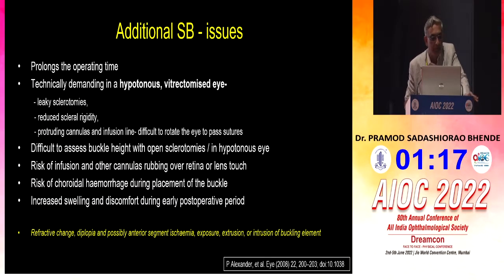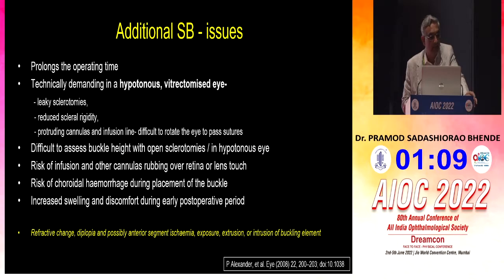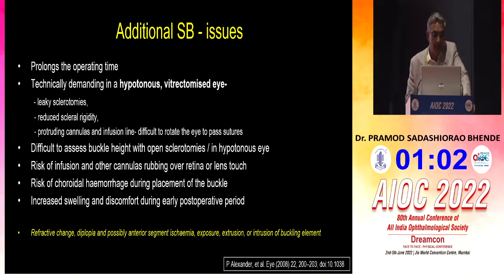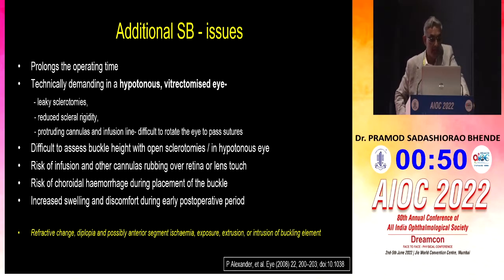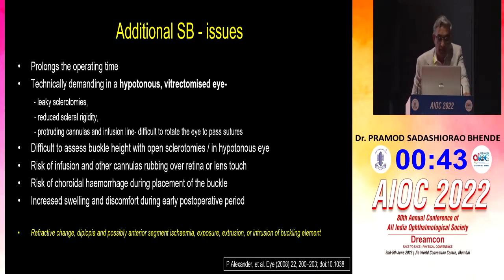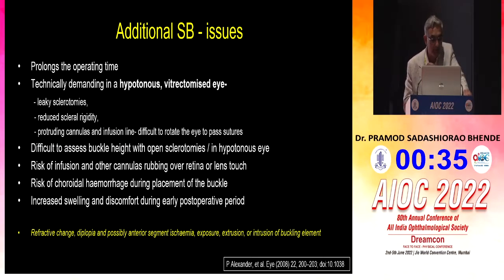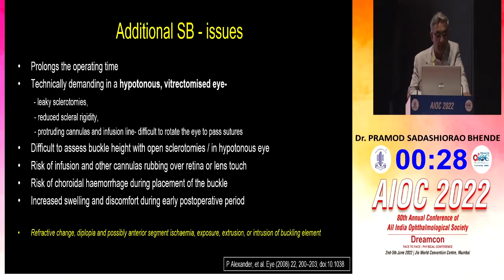Relaxing retinotomy is generally a last option. However, there are issues with the combined approach: it increases operation time, is technically more demanding when dealing with a hypotonous vitrectomized eye because sclerotomies are leaky, reduces scleral rigidity, and protruding cannulas — particularly with the 23/25-gauge system — make it difficult to rotate the eye to pass sutures. It is also difficult to assess buckle height with open sclerotomies and in a hypotonous eye. Apart from what we always discuss: refractive changes, diplopia, and anterior segment ischemia.